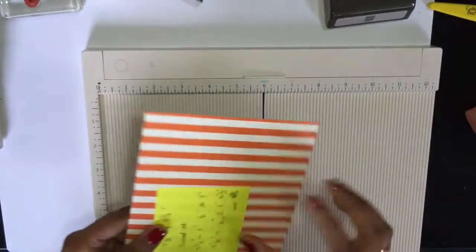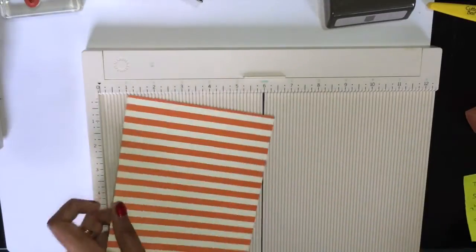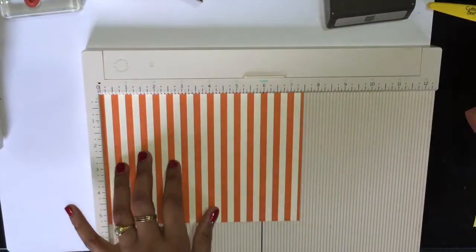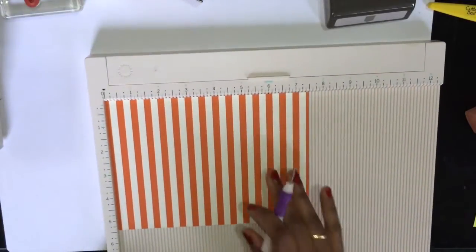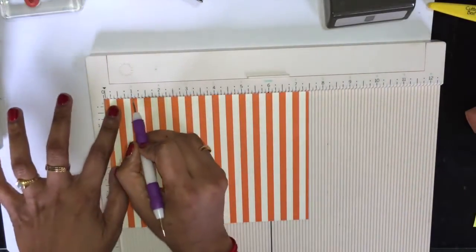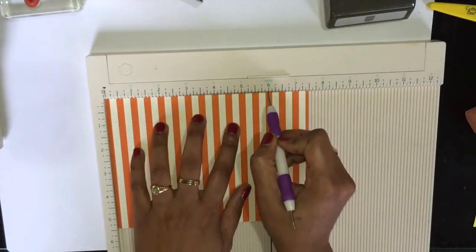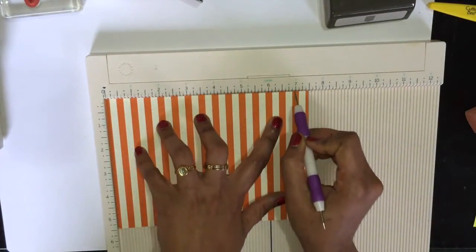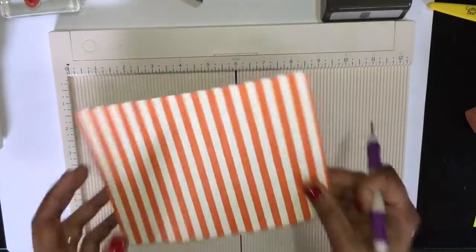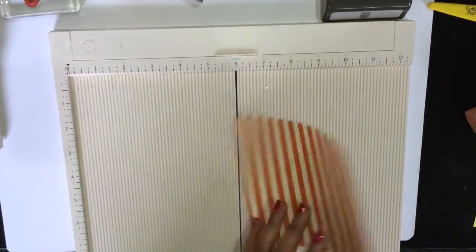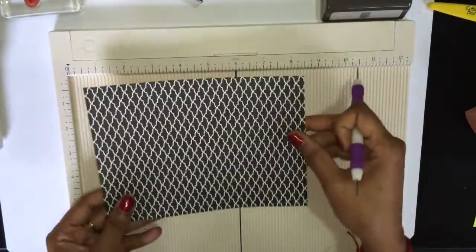First, score at the seven and a half side. Score at one inch, six, and seven inch. In some pattern paper, the pattern is different.